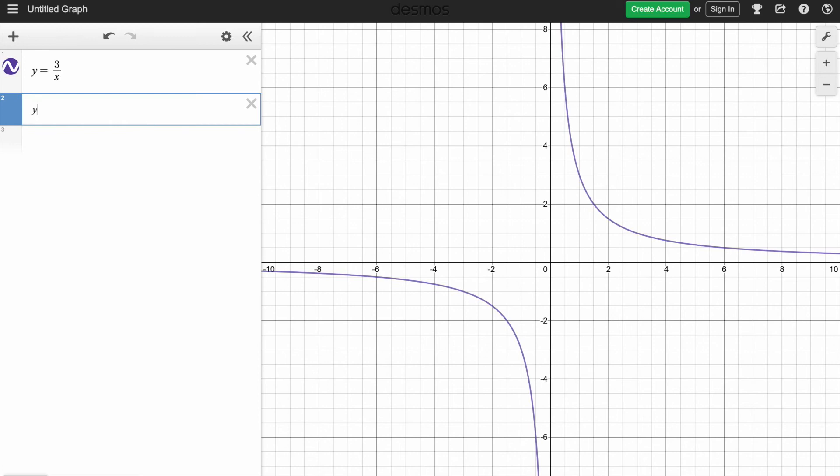If I want to move it left or right, you will say y is equal to 3 divided by x minus 5. Then your graph will move. Okay, you can see that it has moved. That means your asymptote has changed also.